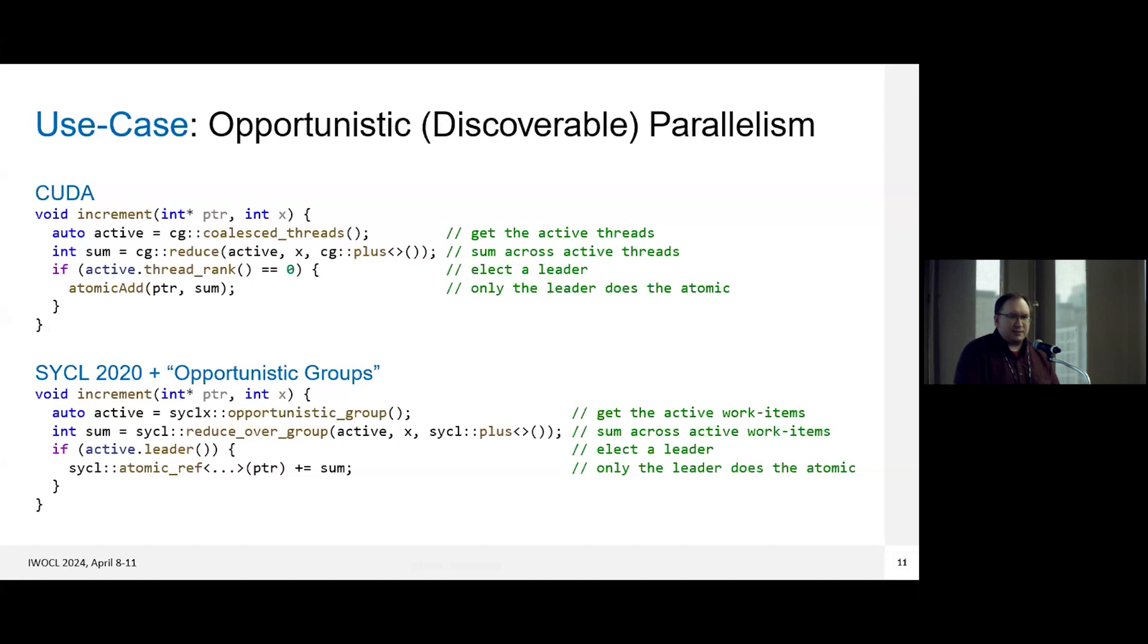So in this case, the semantics are actually fairly loose. So this is the type of thing that we think actually could be done inside a library, an opportunistic group just has to be some of the work items in the control flow. And you could always legally implement this by just being one work item, for example, may not be performant, but it would be correct.